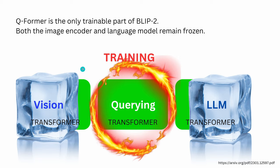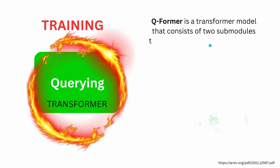They have an interface — an open I/O channel — to these models, but the layers and weights are frozen. The only thing that is trained is between the frozen vision transformer and the frozen LLM (whether that's GPT-3-based methods, Flan-T5, or similar). The only object we train is our Q-Former — our Querying Transformer. This is the hot topic.